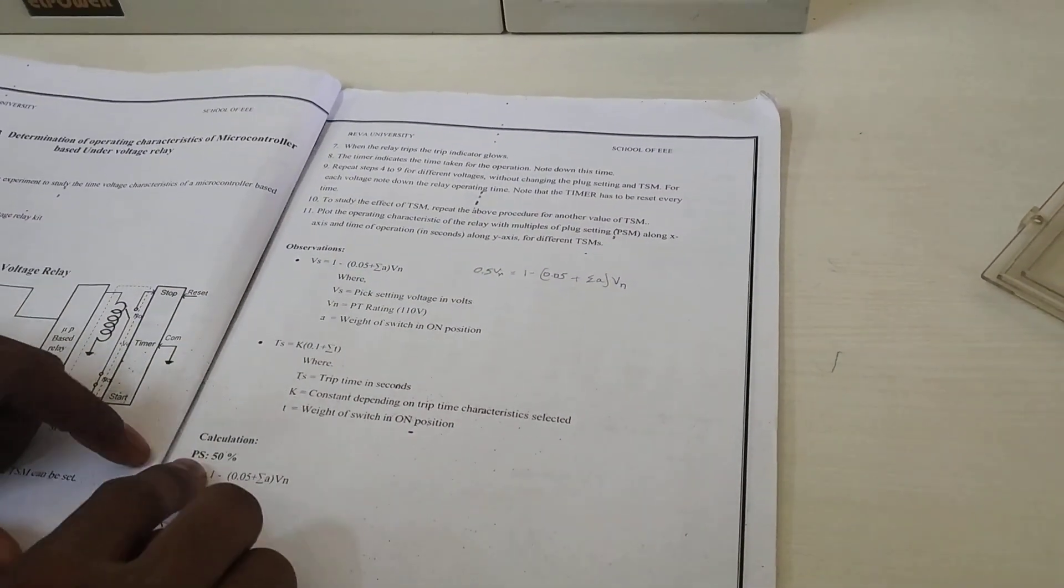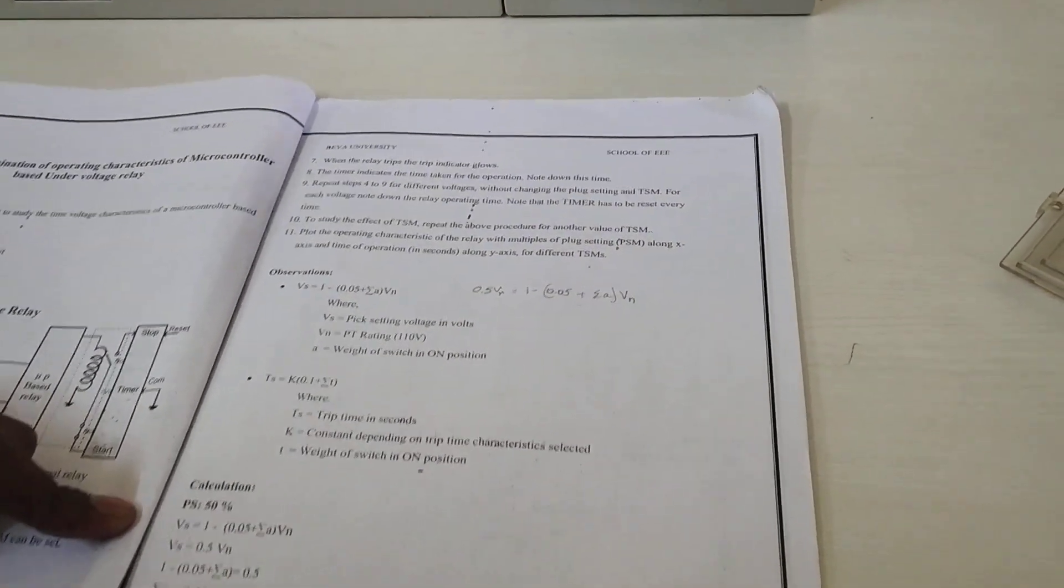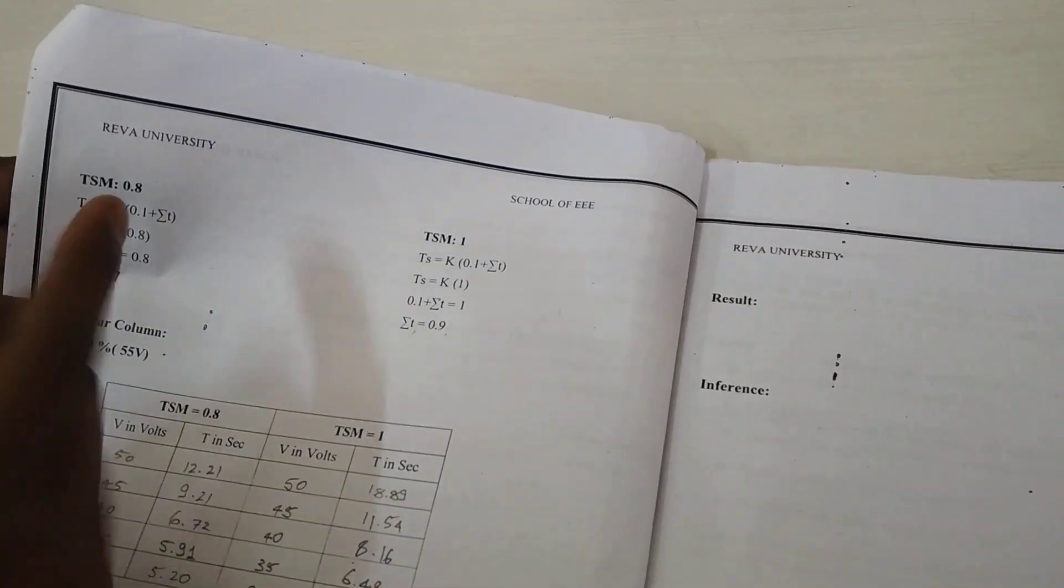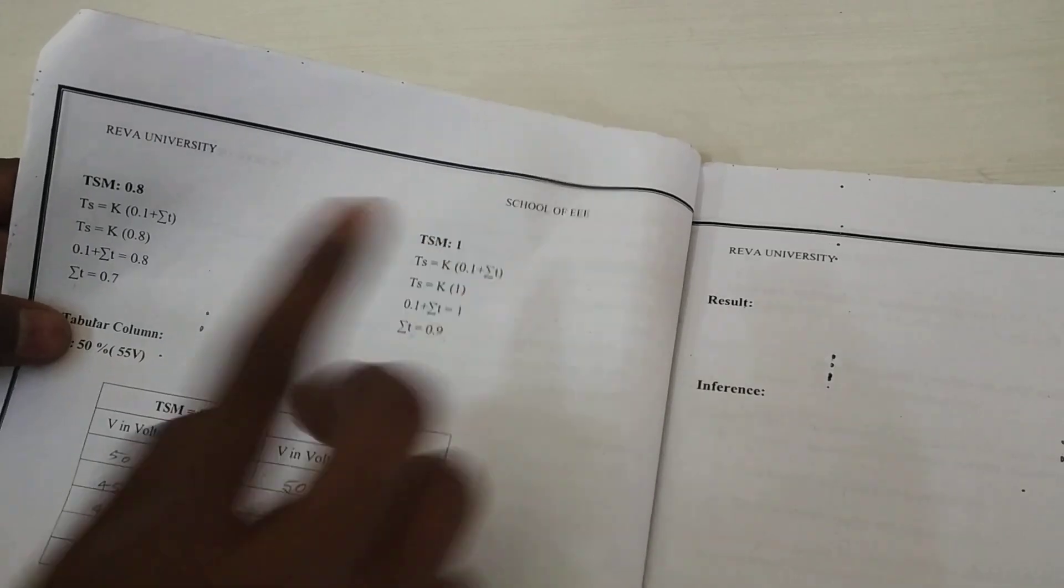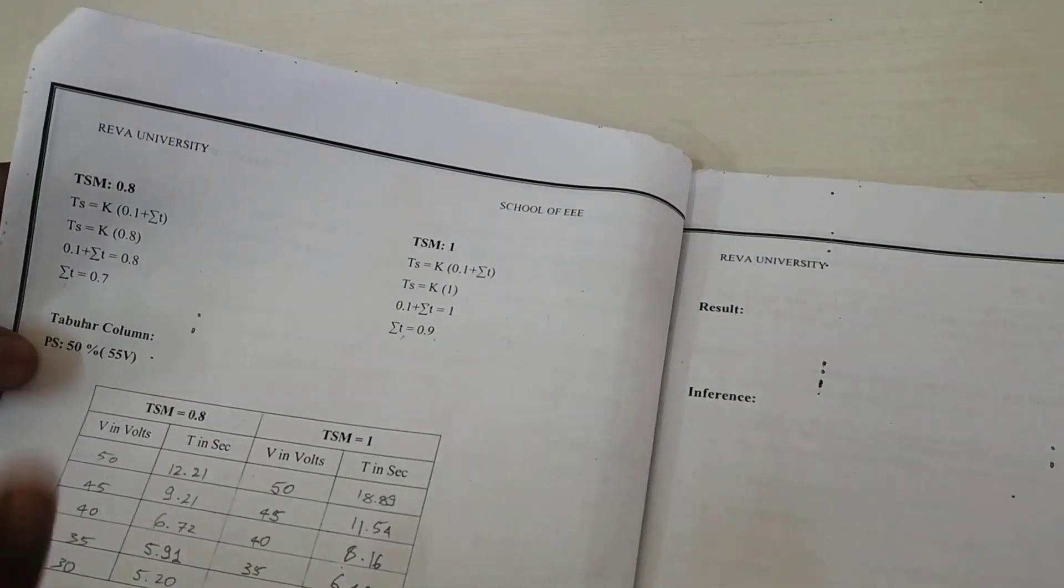Then, time setting multiply - you are using 0.8 and 1 for two time setting multiply readings.